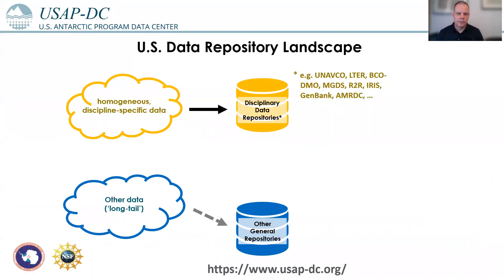If you look at the data landscape — not only of the U.S. — we can distinguish data sets in two categories. On the one hand, we have large data sets that are often homogeneous, discipline-specific, and to a certain degree standardized by community effort.